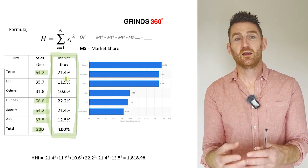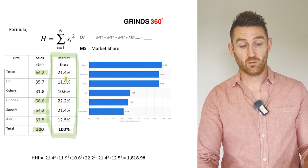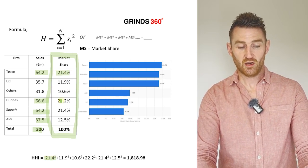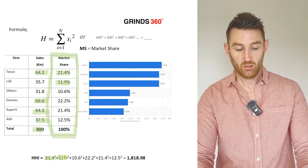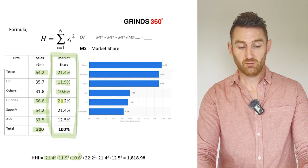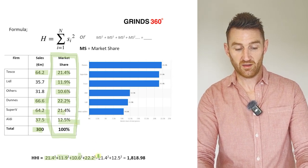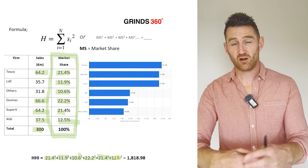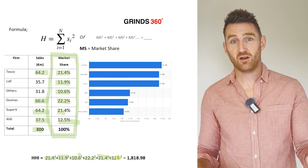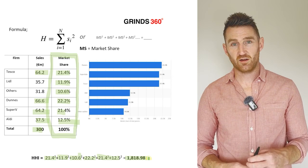To calculate the HHI for the supermarket industry, you square the market share of each firm and add them: Tesco 21.4 squared, plus Lidl 11.9 squared, plus others at 10.6 squared, plus Dunnes 22.2 squared, plus SuperValu squared, plus Aldi squared — and so on for every firm in the industry. Add all of those together. The simplest way to put it: square the market share of every firm in the industry, then add them all. The answer here comes out at approximately 1818.98.